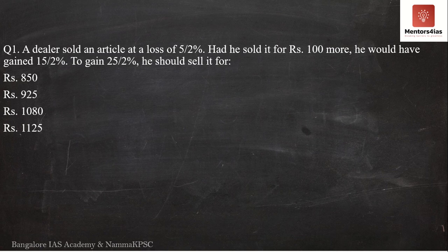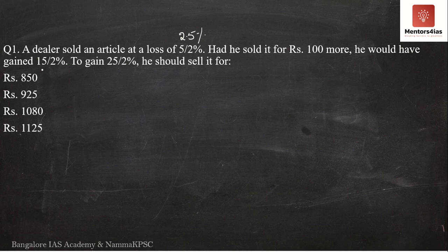Here is the first question. A dealer sold an article at a loss of 2.5 percent. Had he sold it for rupees 100 more, he would have gained 7.5 percent. To gain 12.5 percent, at what rate should he be selling?